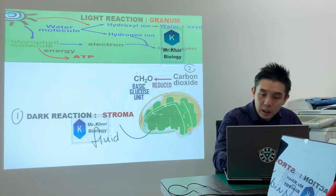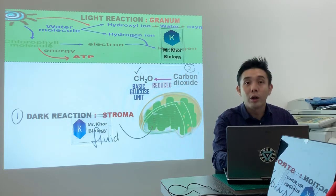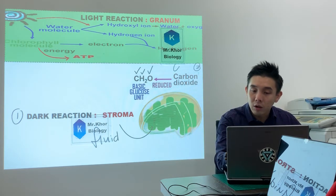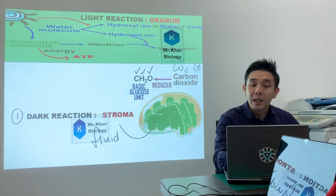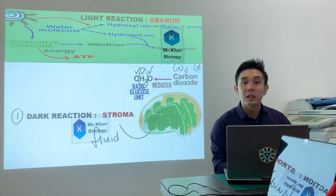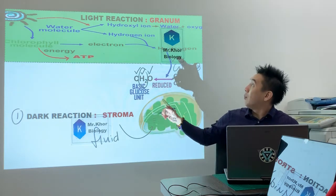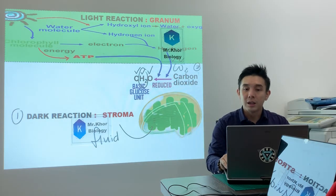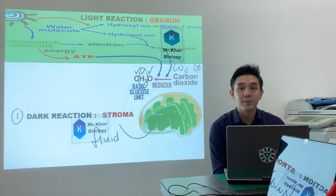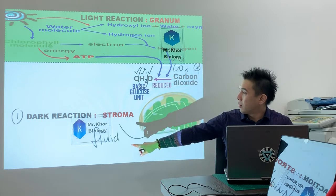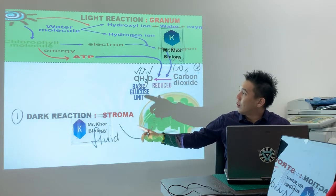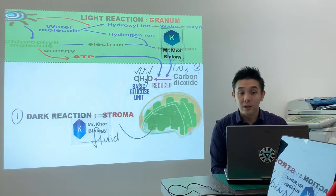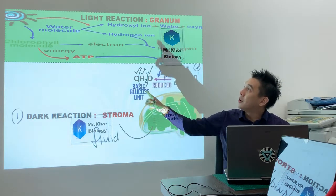Look, this basic glucose unit got carbon, got hydrogen, got oxygen. But hey, carbon dioxide here got carbon and oxygen only. Hydrogen actually comes from the light reaction. Not only hydrogen, ATP also comes from the light reaction. One more time: carbon dioxide reduced to basic glucose unit, ATP and hydrogen atoms from light reaction is used.